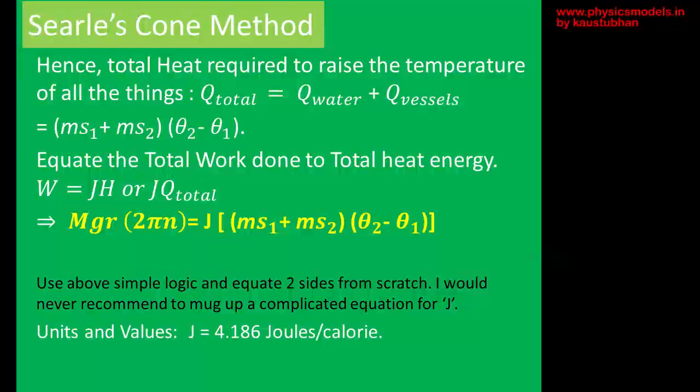Which is the ms₁ plus ms₂ into the common increase in temperature. When you equate that, we know everything except J. So, you will get the equivalent of heat. And that's a constant, and that's 4.186 joules per calorie.